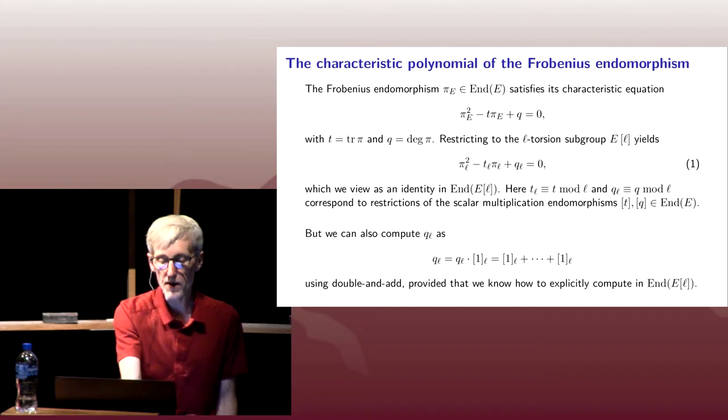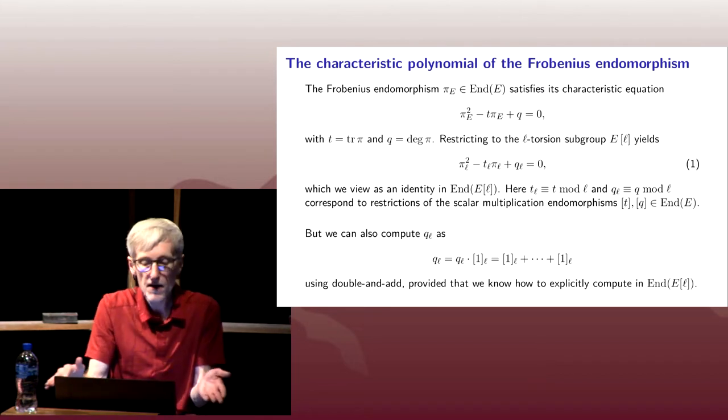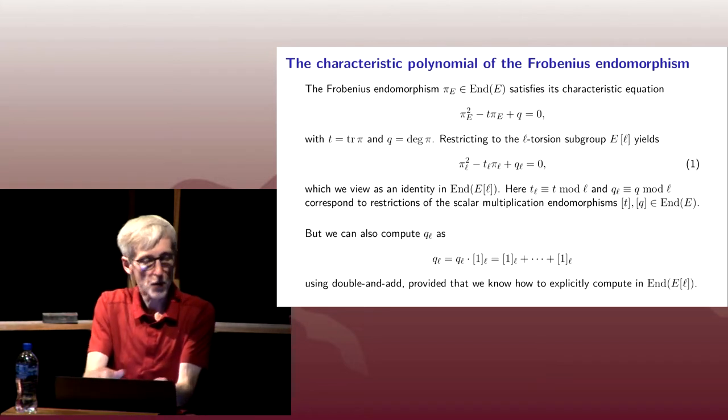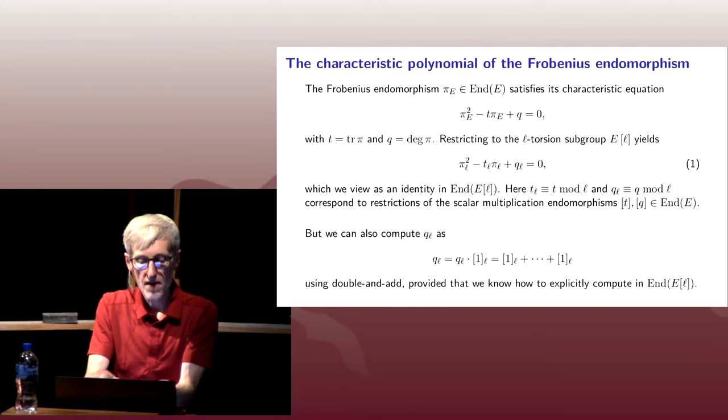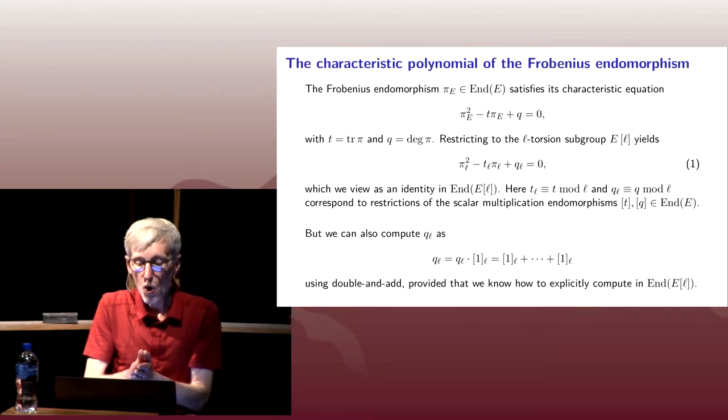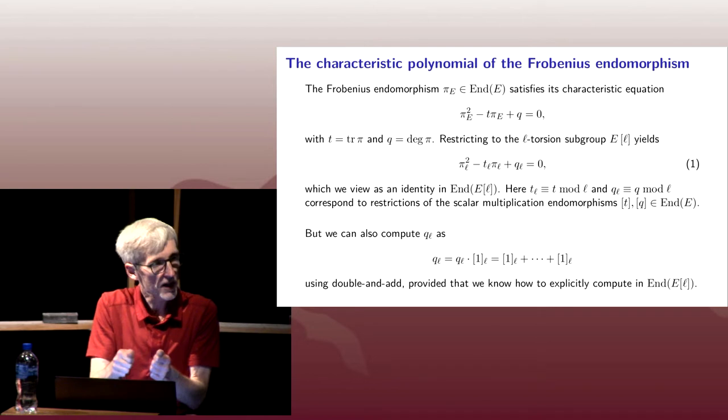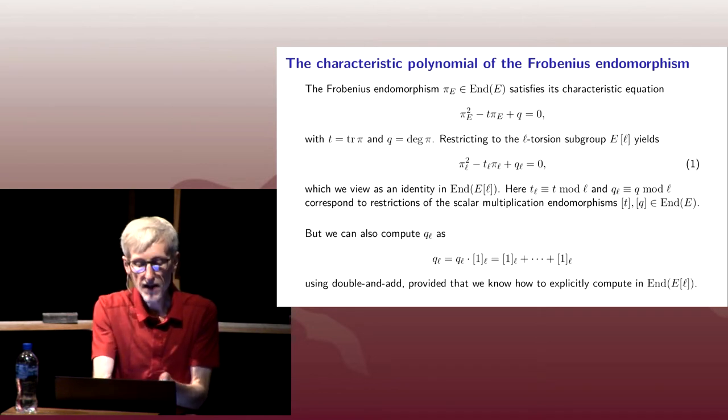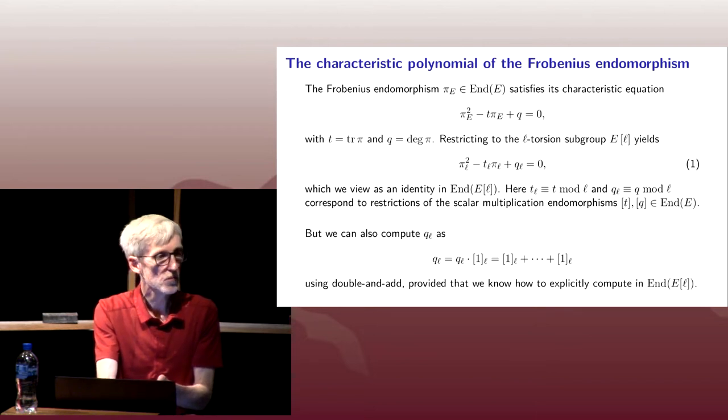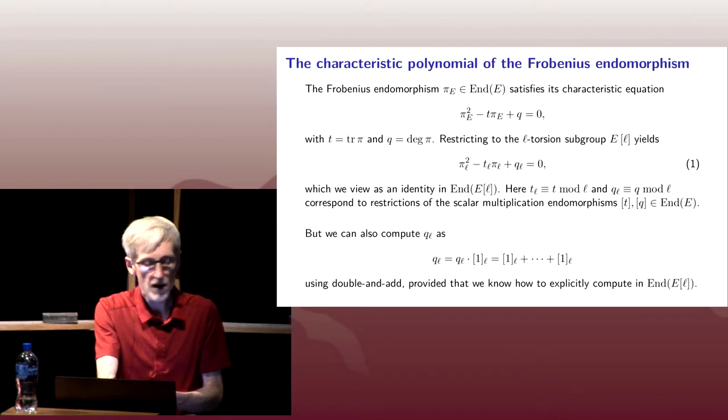And that also makes sense mod l. So now we have equation one, we should think of that as an identity inside the endomorphism ring of our l-torsion. We know or can easily compute everything in that equation, except t, t_l. We know what q is, so we know what q_l is. We can compute the multiplication by q map restricted to the l-torsion.